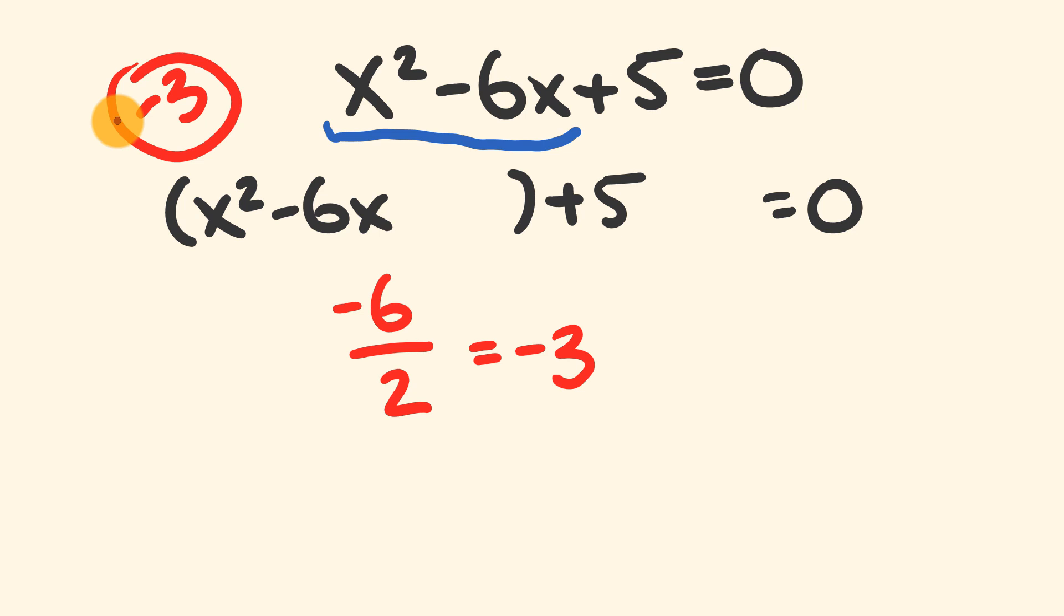The next thing we do is take this -3 and square it. -3 × -3 = 9. That's what we put in our space over here, so we have +9 goes in here. To keep our equation balanced, we have +9 here, but over here we're going to put -9 to keep our equation balanced.